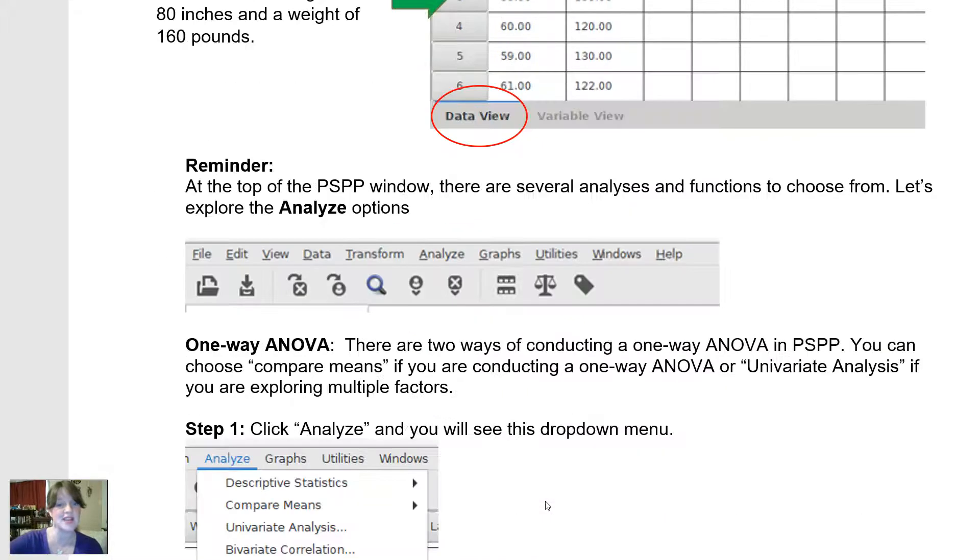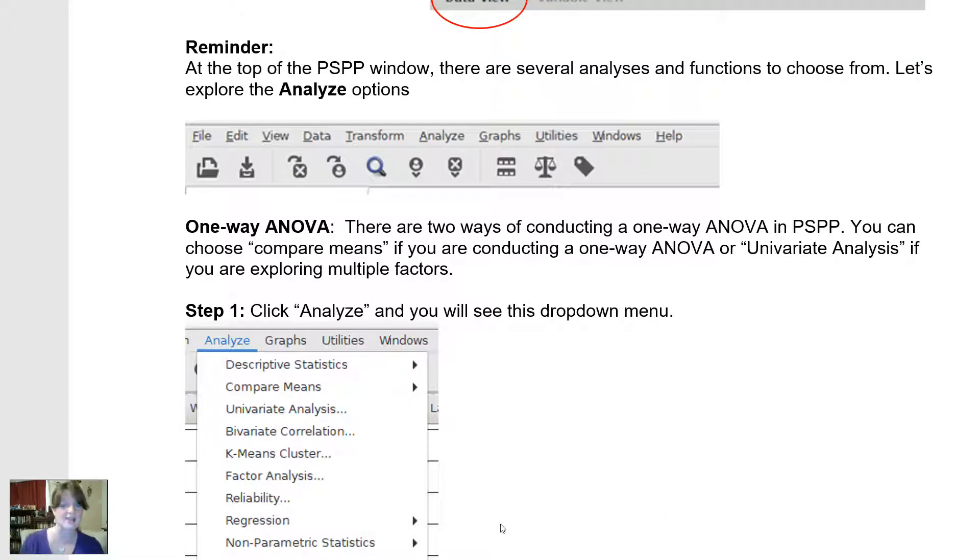Now, mostly in this series of videos, we've been using the analyze function in PSPP to explore data. Today will be no exception. So in PSPP, to do a one-way ANOVA, you're going to click the analyze option.